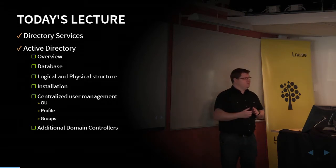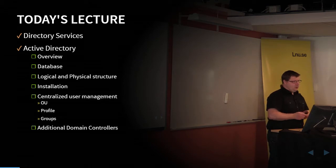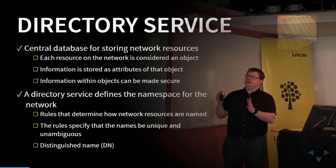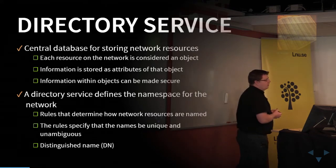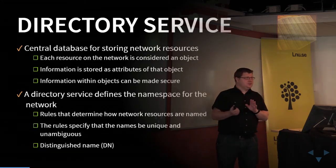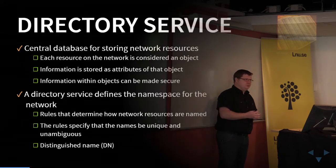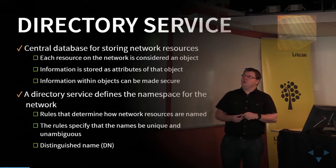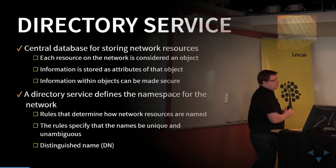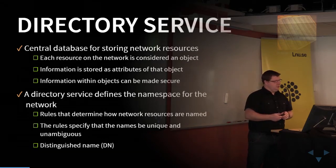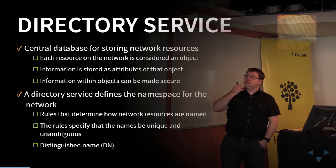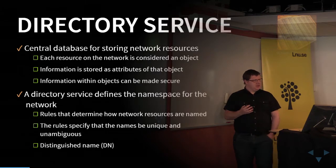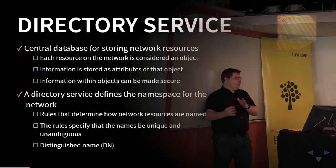A directory service is a database for storing network resources. Each of these different resources is considered an object, and every object has a lot of different attributes. We usually implement security with the directory service when we add users and passwords, and then we can use this information to secure our network devices. We also define a namespace for our network, setting up rules for how naming should be done. These rules specify that names have to be unique and unambiguous so you can differentiate one object from another.